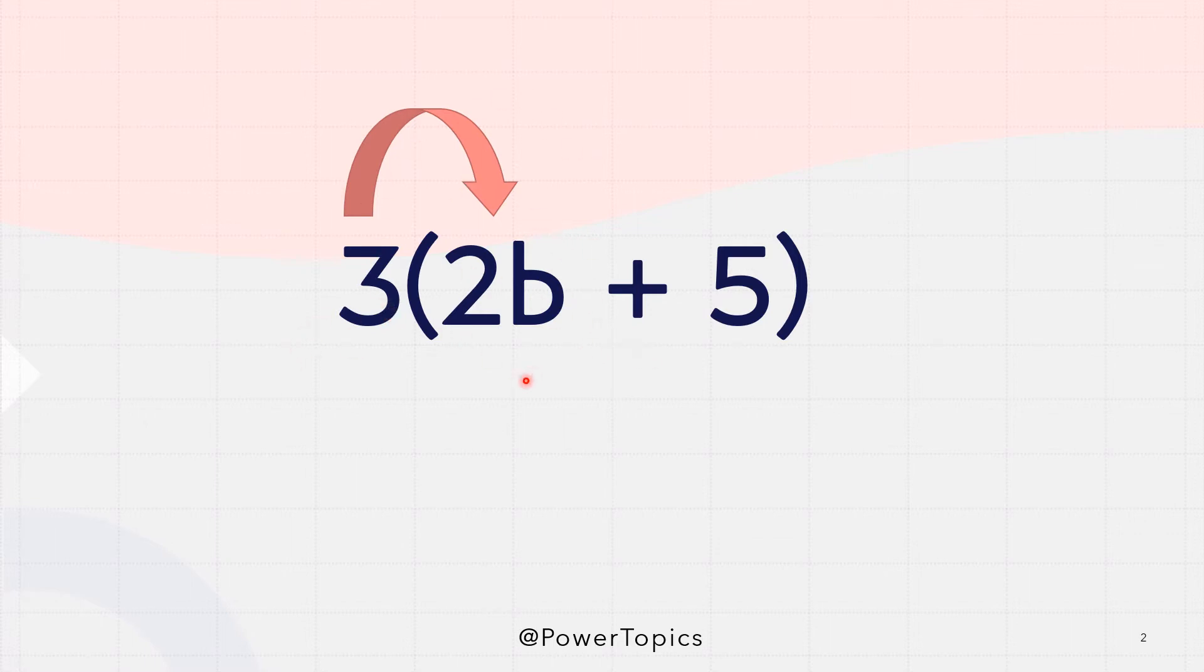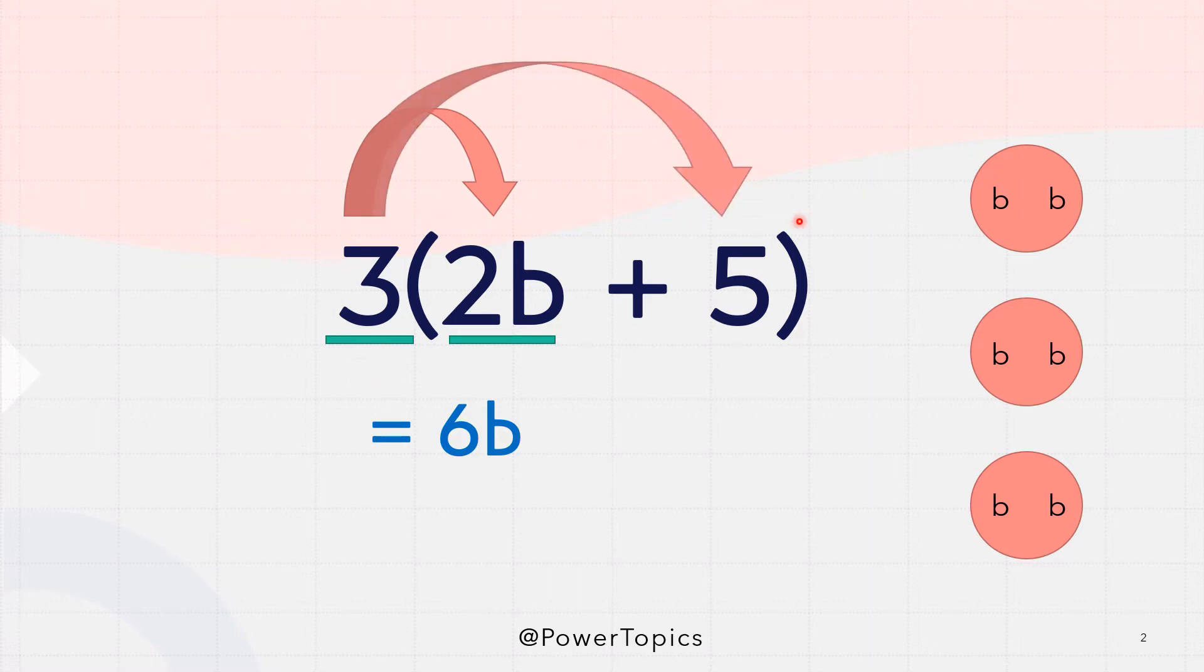So 3 multiplied by 2b and we get 6b. So how we got 6b? Imagine we have 2b's and we multiply it 3 times so we've got 6b's. Now 3 multiplied by 5, that should be easy which is 15. Now do not forget the operator in the middle so we have plus. Notice that it is the same operator which was inside the bracket.